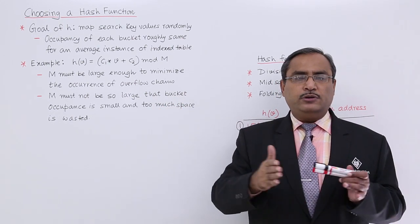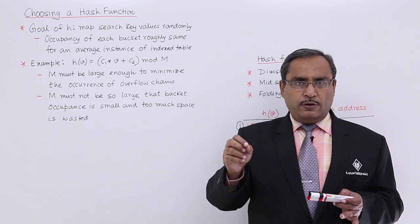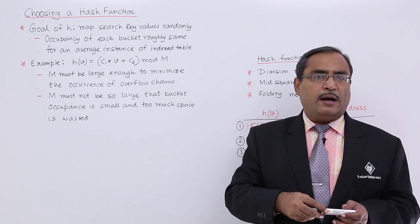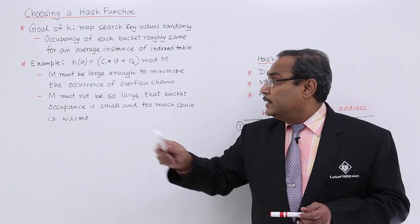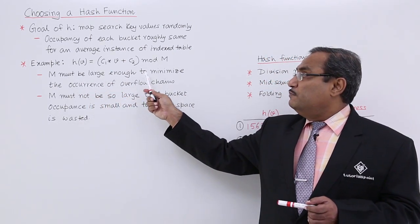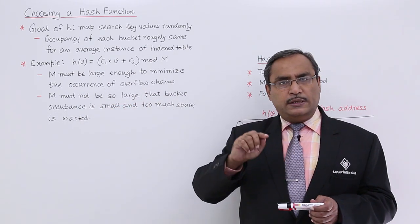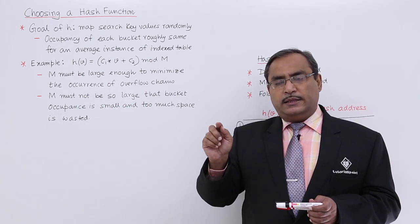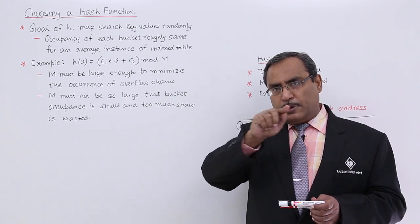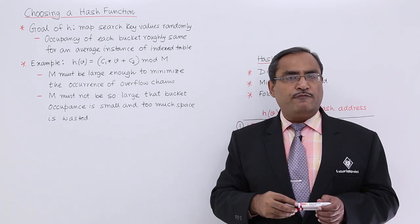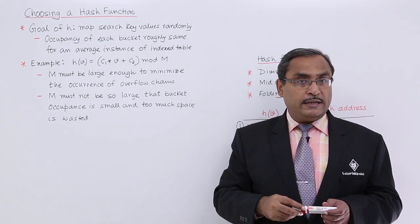For the larger value of m the range will get elongated; for smaller value of m the range will get reduced to some extent. m must be large enough to minimize the occurrence of overflow chains. If we have this larger value of m then we can have multiple number of pointers accordingly, so that the probability of occurrence of the overflow chains will be minimized.